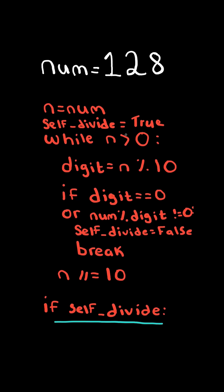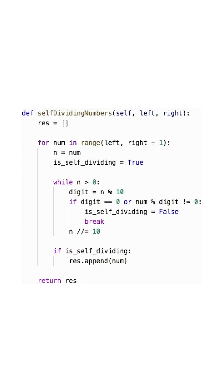At the end of the loop, if the flag is true, then we append the number to the list. Here's the code to do so.